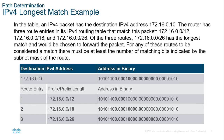Here we have a destination IP and three route entries. We're looking to see which route entry has the most matching bits. Route 1 has 12 matching bits, route 2 has 18 matching bits, and route 3 has 26 matching bits. Route 3 will be the longest match for that IP address, so it will use this route to forward the packet destined for that network.